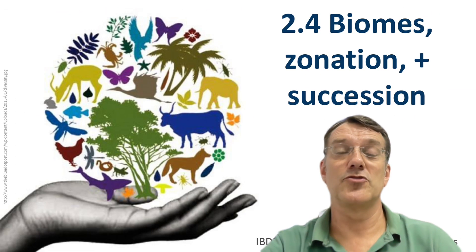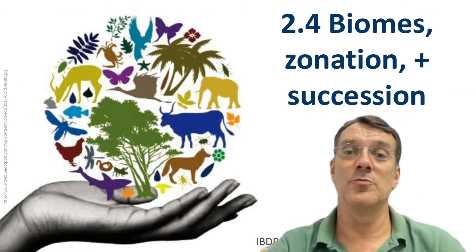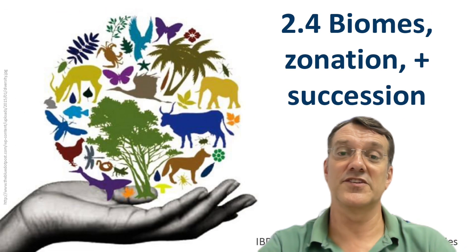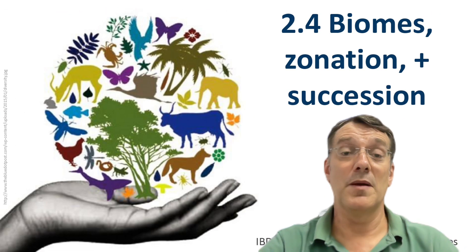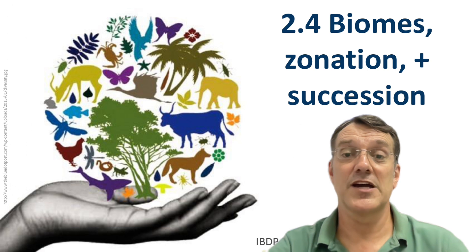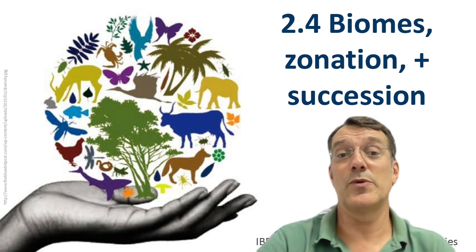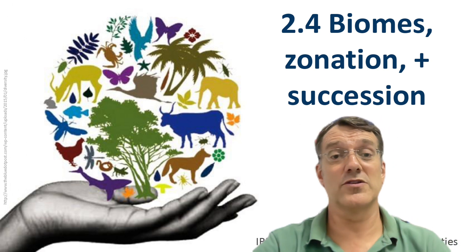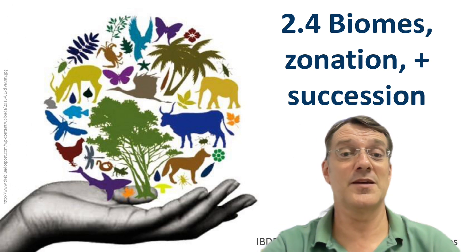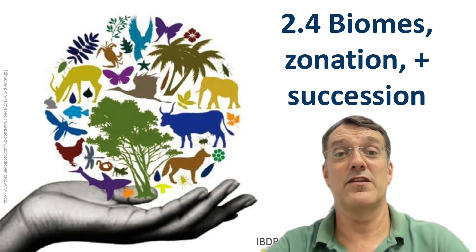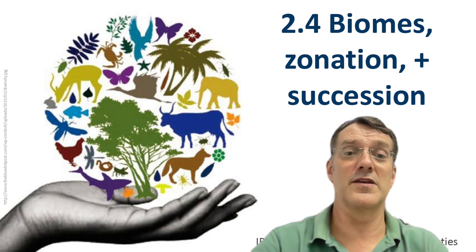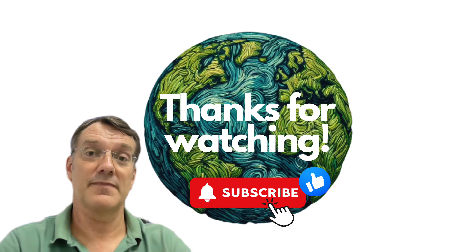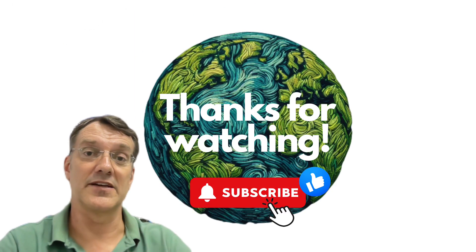That's it for Topic 2.4, Biomes, Zonation, and Succession. Remember that these concepts help us understand how ecosystems are distributed globally, how they change across landscapes and time, and how they develop throughout the years. Until next time, happy learning.